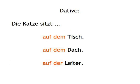In the dative — like a photo. Die Katze sitzt auf dem Tisch — the cat's sitting on the table. Die Katze sitzt auf dem Dach — the cat's sitting on the roof. Die Katze sitzt auf der Leiter — the cat's sitting on the ladder.